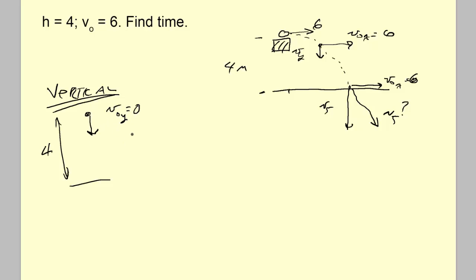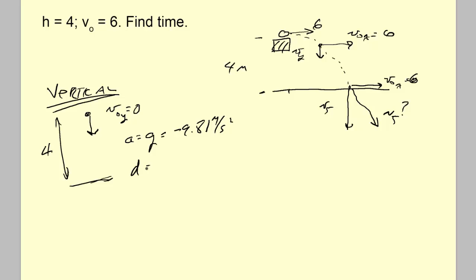So initially the vertical velocity is 0, it falls for 4 meters, and then it hits the ground. What do we know? The initial velocity is 0, the acceleration due to gravity is -9.81 m/s², and the displacement is 4.